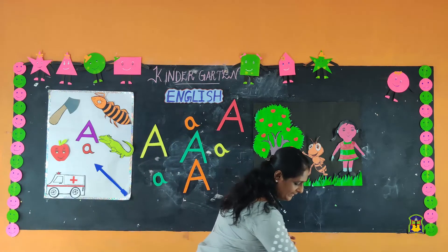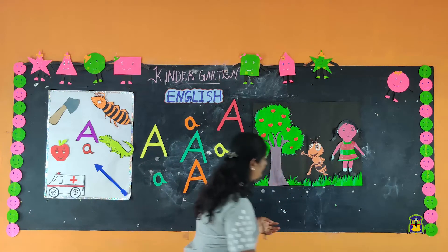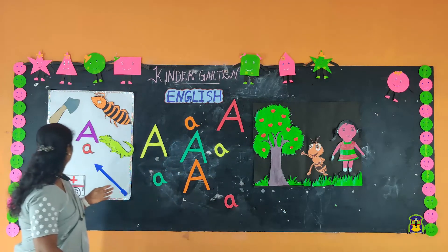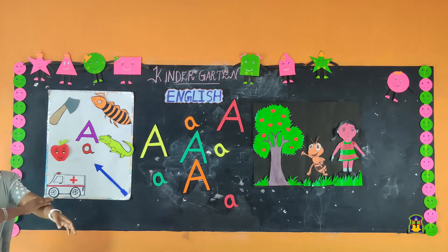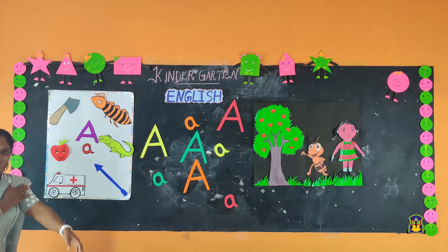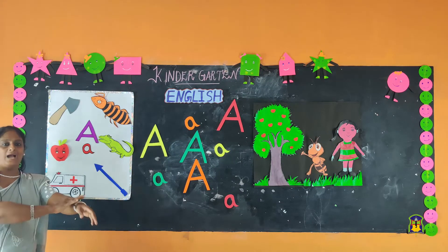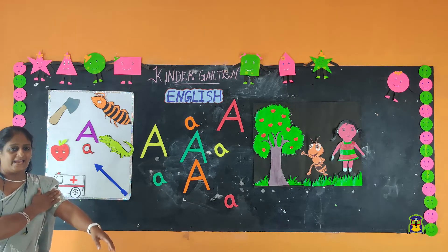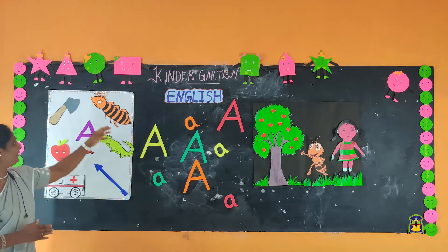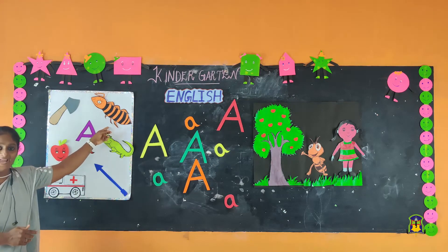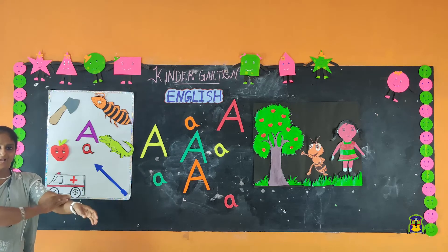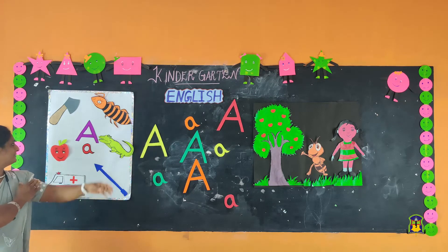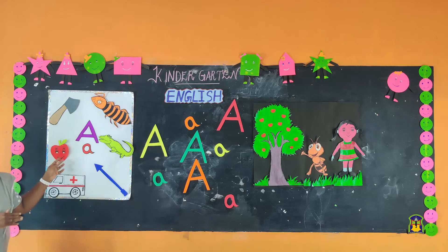Look here, children. And what is this? Ah, ah, ah — all of you say 'ah, ah.' And what is this? Ant. How to say? Ah, ah — ant.